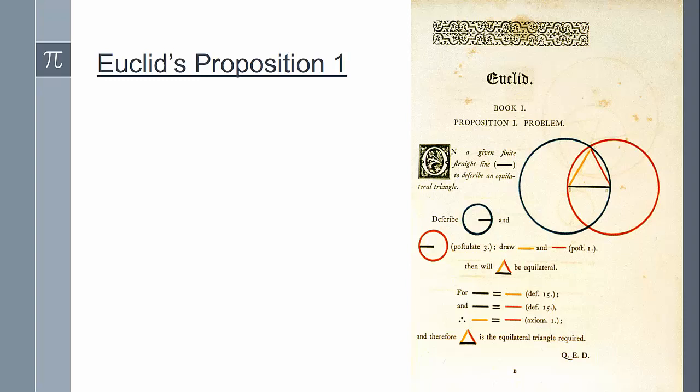Earlier in the semester, when we looked at compass and straightedge constructions, we actually looked at Euclid's first proposition, where he states that given any segment, there's an equilateral triangle having the given segment as one of its sides. The idea of the proof is to draw two circles, each centered at the endpoints of the given line segment. Then where the two circles meet, that becomes the third point of the equilateral triangle. And since all of the sides are radii, then those sides are congruent.